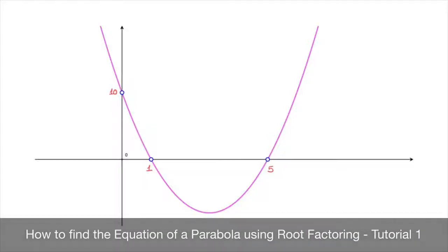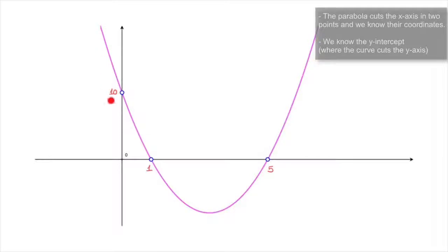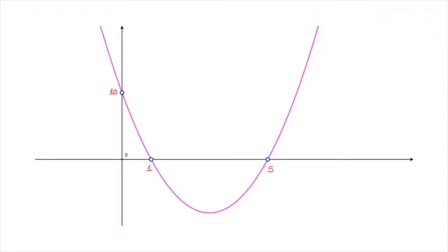We now learn how to find the equation of a parabola using root factoring. The scenario we'll be looking into in this tutorial is the one we can see here. We're given a parabola that cuts the x-axis in two points, we know the two x-values at which it does so, and we're given the parabola's y-intercept. By the end of this tutorial, we'll know how to find the equation of any parabola looking similar to this one.